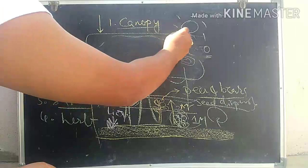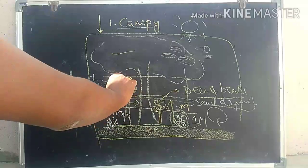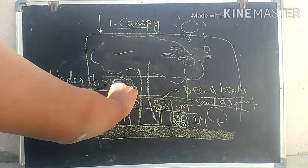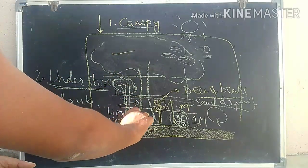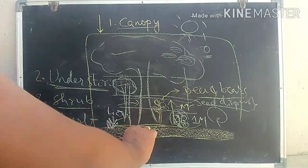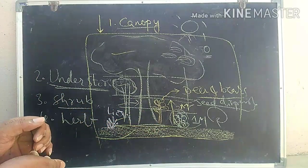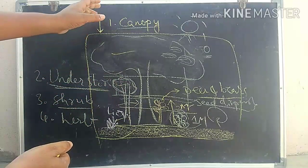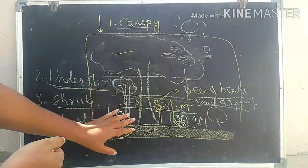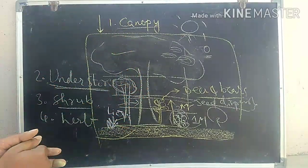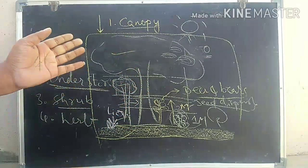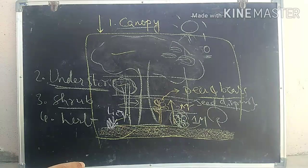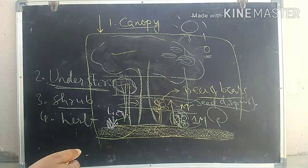So the forest structure has five layers: canopy, understory, shrub layer, herb layer, and forest floor. With this we have completed the structure and layers of the forest. We will discuss more about the forest in further classes. Thank you.